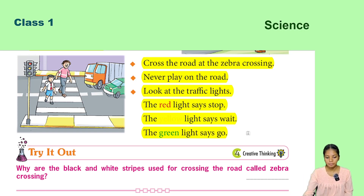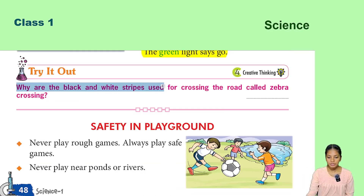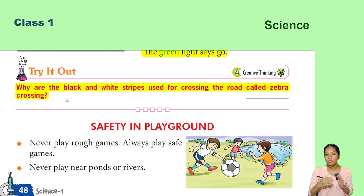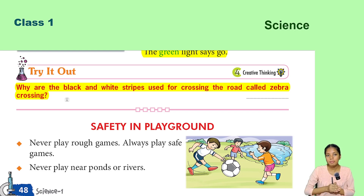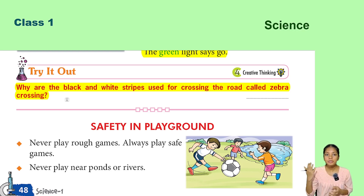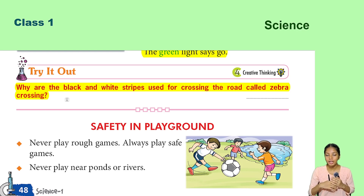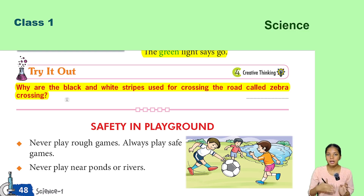Why are the black and white strips used for crossing the road called zebra crossing? The strips on the road are black and white, just like the black and white stripes on a zebra's body — that is why it is called zebra crossing.